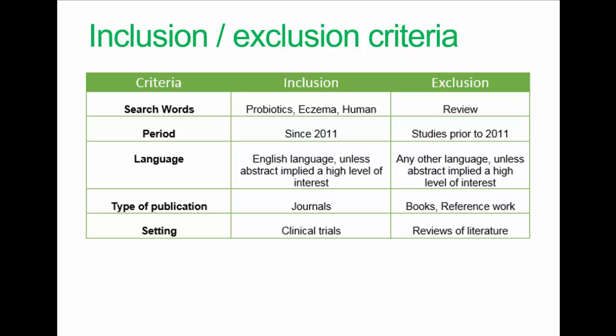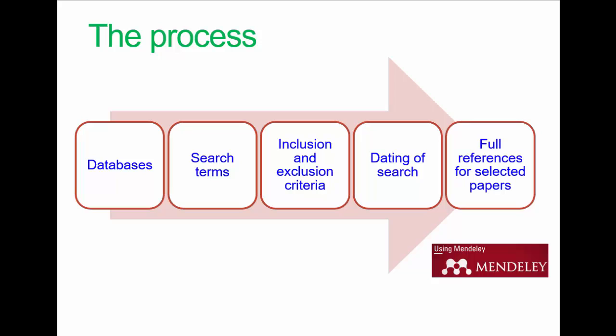Date is a common criterion — in many cases it's only appropriate to go back five years from the current date, given the pace of development of knowledge in various areas. You may also want to include just human studies, for example, and exclude animal studies where they may not be particularly relevant. Using a reference manager greatly facilitates the process. That's all for this short first part — as ever, you should discuss these issues with your research supervisor.